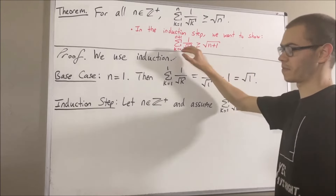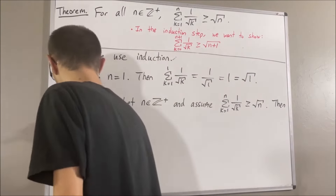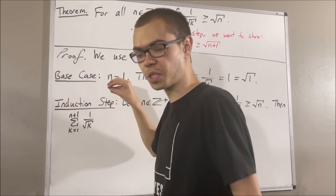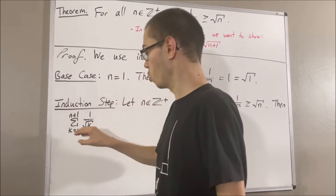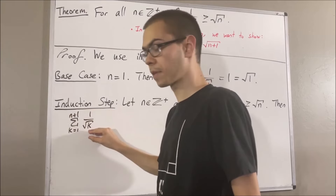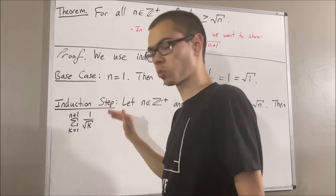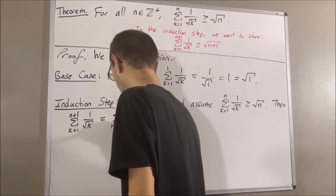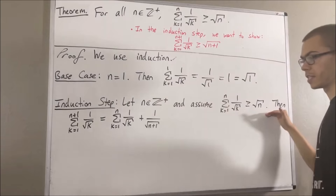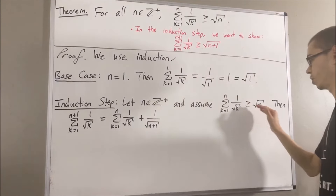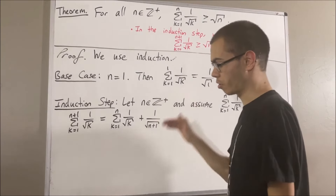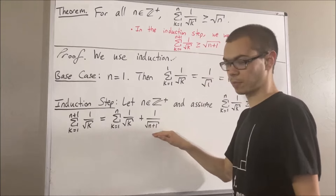So let's start by writing the left-hand side. Now, let's pull away the (n+1)th term of this sum. We can rewrite this as the sum from k equals 1 to n of 1 over the square root of k, plus 1 over the square root of n plus 1. Now, by the induction hypothesis, we know that this sum is greater than or equal to the square root of n. And therefore, this entire thing is greater than or equal to the square root of n plus 1 over the square root of n plus 1.